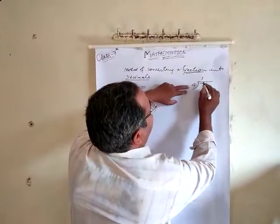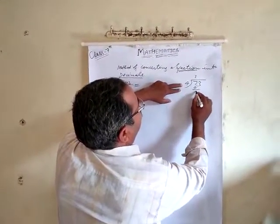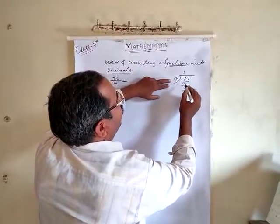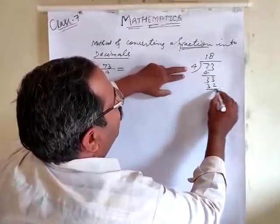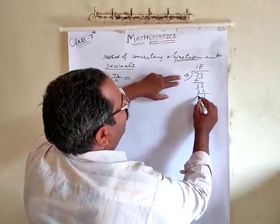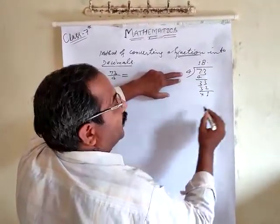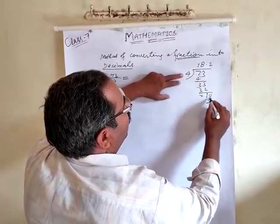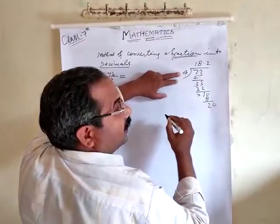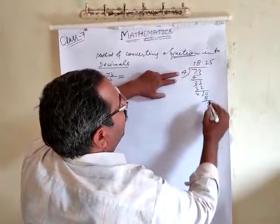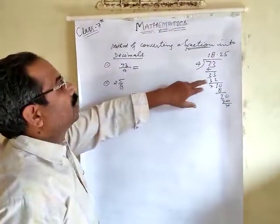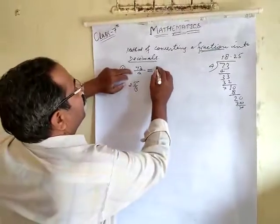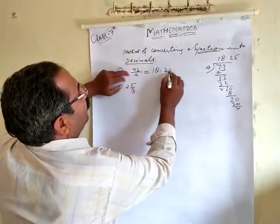So, 4 ones are 4. 7 minus 4 is 3. Bring down 3. 4 eights are 32. 3 minus 2 is 1. After that, you will put the decimal point and increase a zero. 4 fives are 20, so it is perfectly divisible. The answer is 18.25.